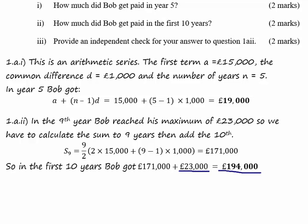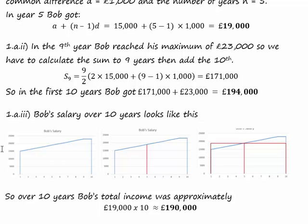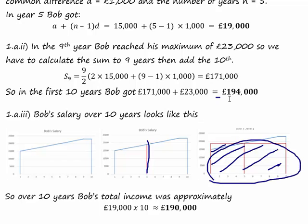Part 3. Provide an independent check to your answer in Part 2. This is what Bob earned in the first 10 years. Up to year 10, he was getting additional £1,000 a year. The total amount that Bob earned in that time is actually the area under the curve. As a quick check, we can find out how much Bob earned in year 5 and then multiply that by 10 to calculate the area of that rectangle. Now it's not exact because Bob was clipped at year 9, but if the area of the rectangle gives us a value similar to the £194,000 that we've got there, then we should be okay.